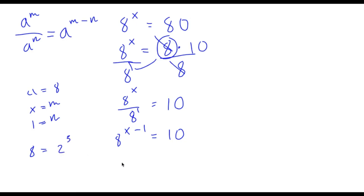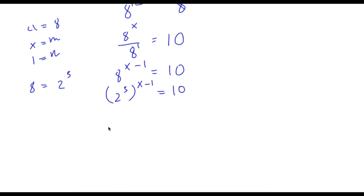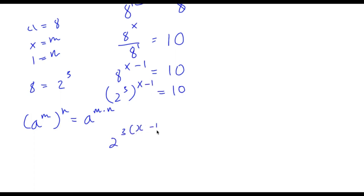Now 8 is the same thing as 2 to the power of 3. So I rewrite 8 to the power of x minus 1 as 2 to the power of 3, to the power of x minus 1, equals 10. Using the power rule, this becomes 2 to the power of 3 times x minus 1, which equals 10. Distributing the 3 gives 2 to the power of 3x minus 3, equals 10.